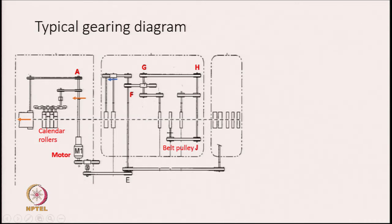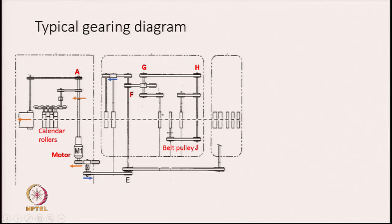From this side the motion is flowing — from here it goes there, it goes in this direction, and as you see from here the motion is distributed. So by the time it goes to pulley F, part of the motion goes to the right hand side, from here going to the front roller.